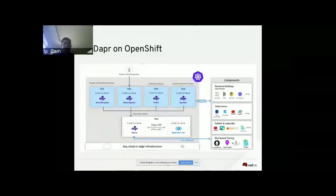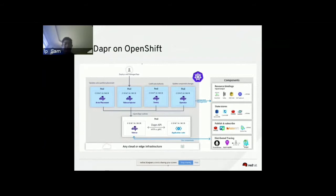For DAPR on OpenShift, you set up different pods using DAPR, and each pod contains a DAPR container. For example, you have a DAPR actor pod, a DAPR sidecar injector pod, and a DAPR operator pod. All these different DAPR pods interact with the DAPR sidecar. DAPR also has an API supporting HTTP or gRPC to talk to your application code. On the right-hand side, it interacts with other components using resource binding, the state store, publish and subscribe, and distributed tracing.